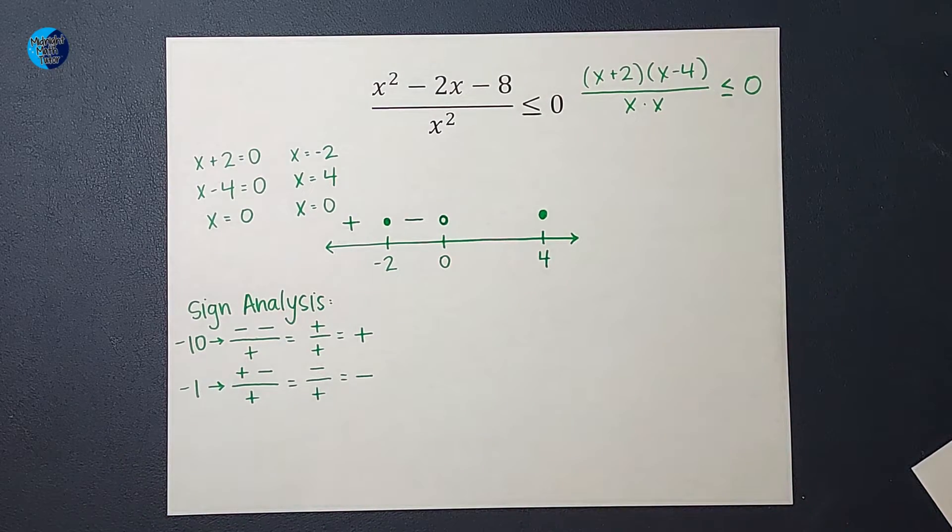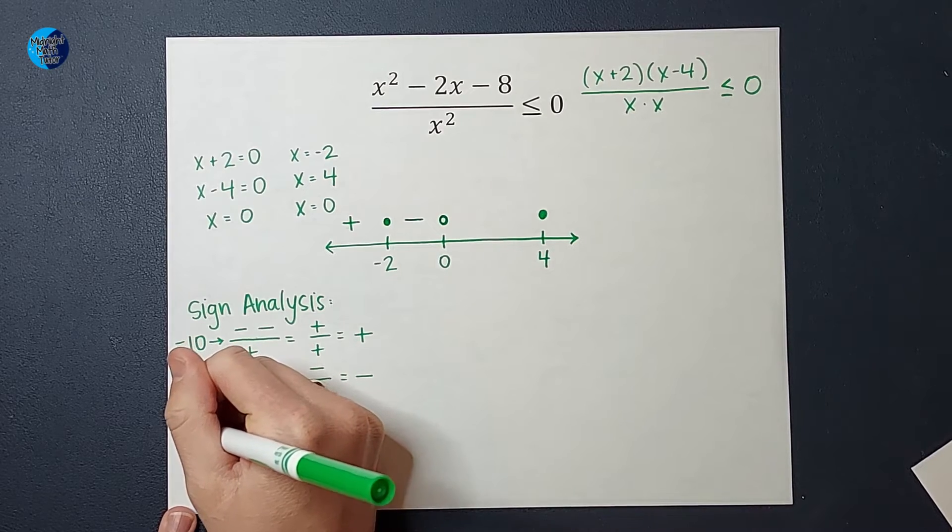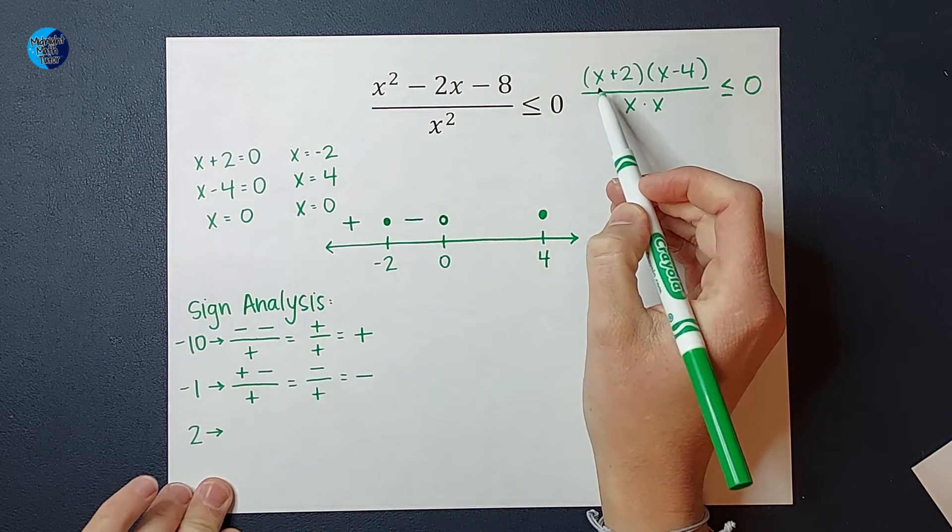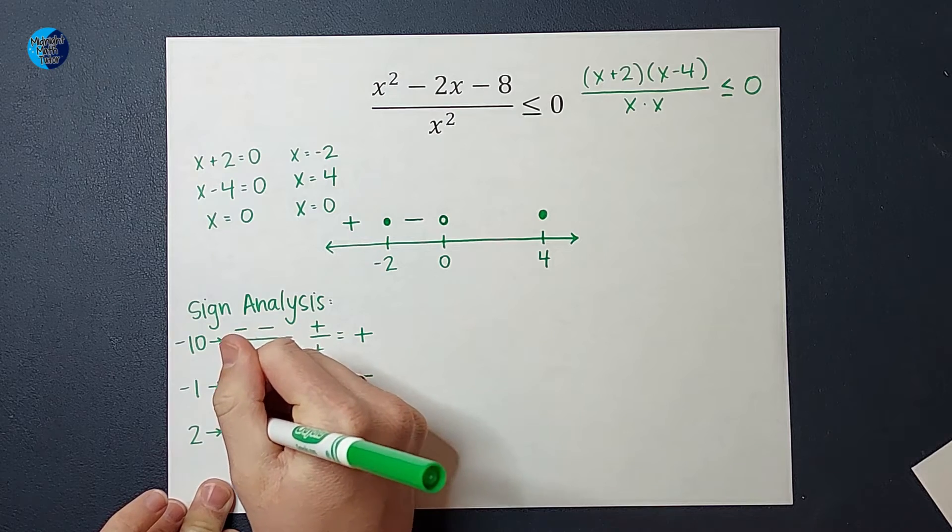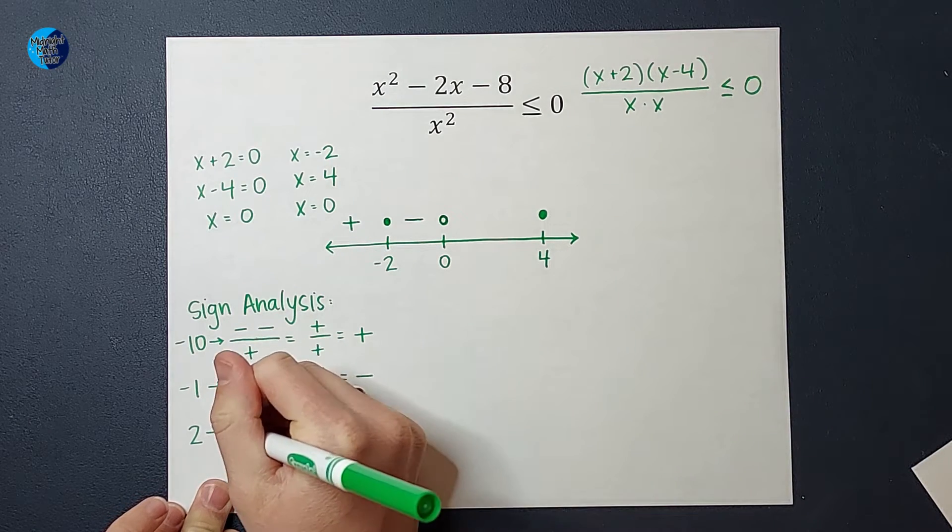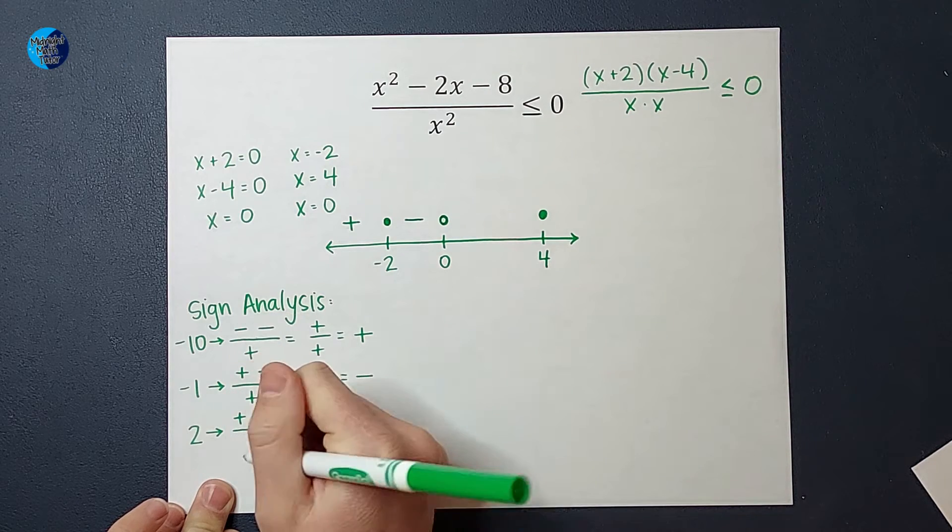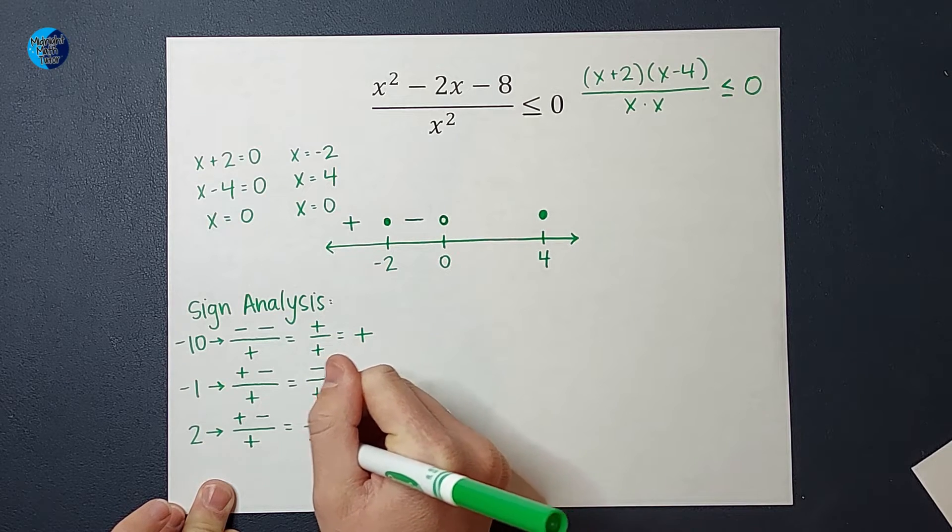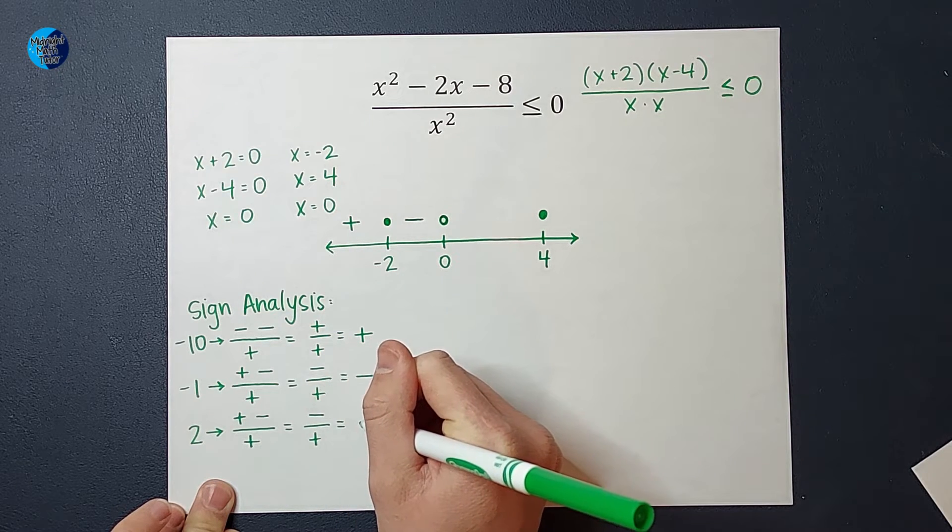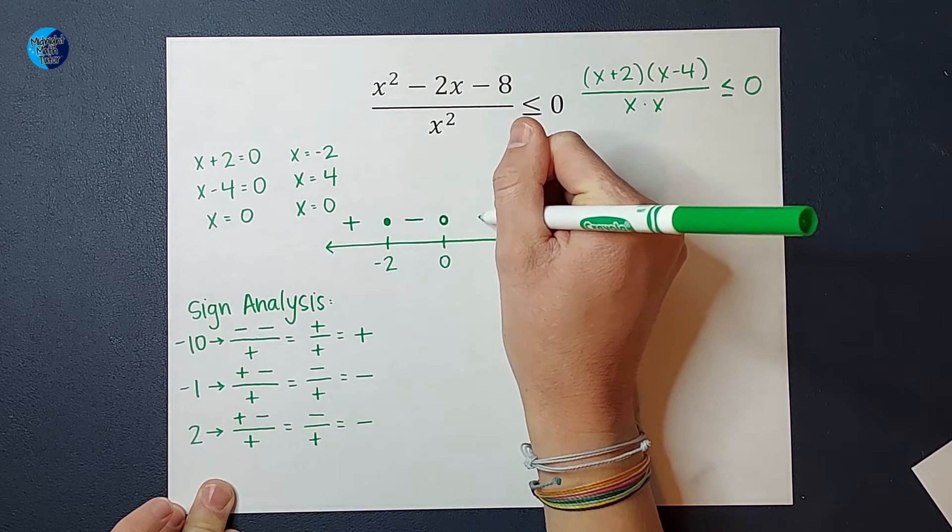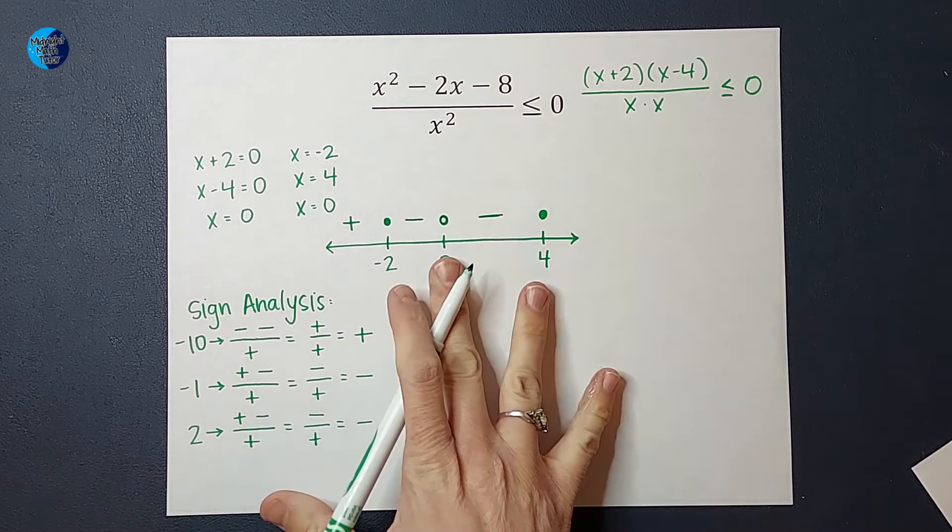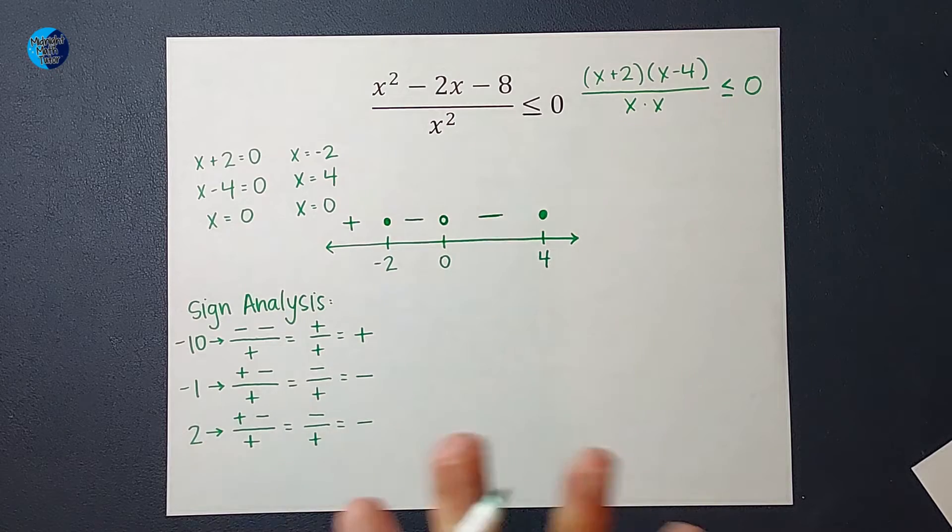Now I'm going to pick a number between 0 and 4. Let's just pick 2. Why not? If you want to pick a different number, make sure you get the same either positive or negative with me. Go for it. So if I plug in 2, on top, I have 2 plus 2, which would be positive. 2 minus 4, which would be negative. Over 2 times 2 would be positive. So on top, I'd have positive times a negative, which is negative. Positive on bottom. Negative divided by a positive is negative. So this is a good example. A lot of times when you do these, it alternates positive, negative, positive, negative. But in this example, it doesn't. So we can't always bank on that it's going to do that.